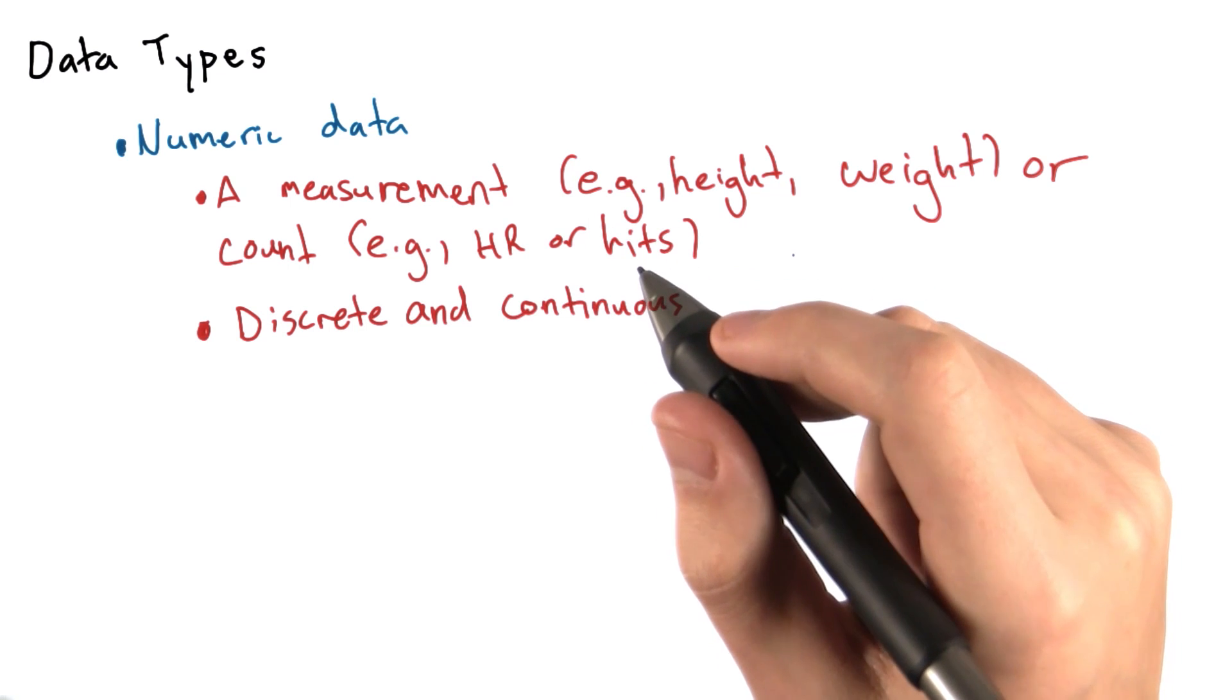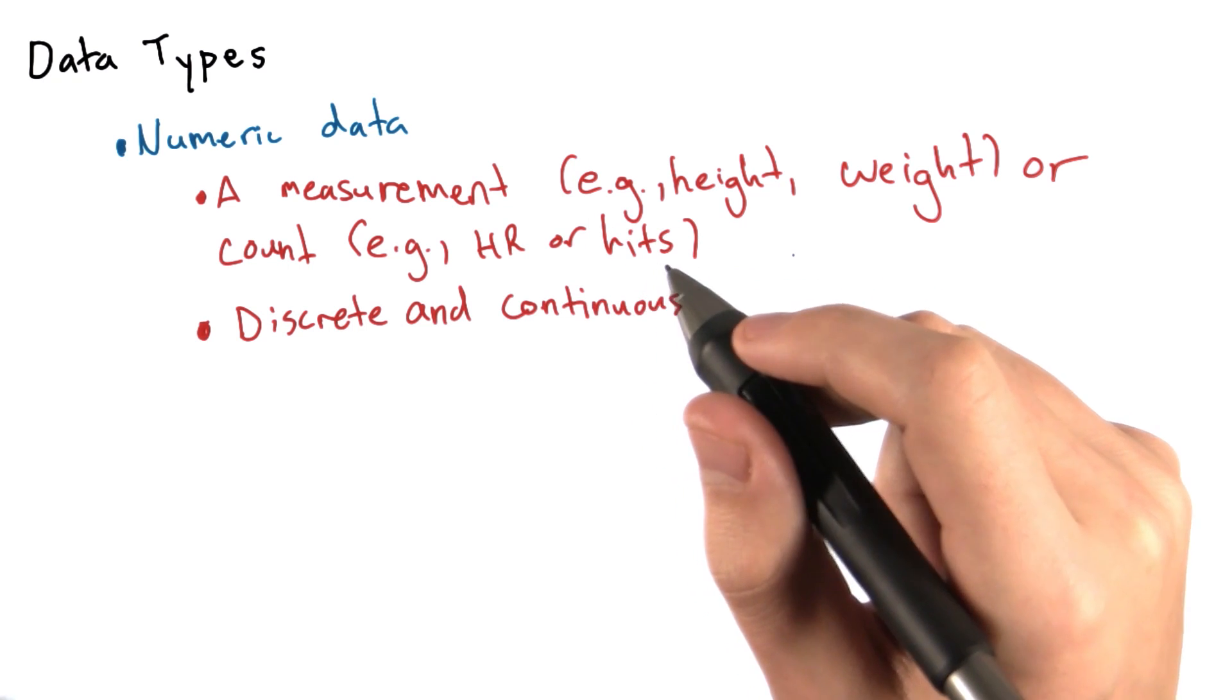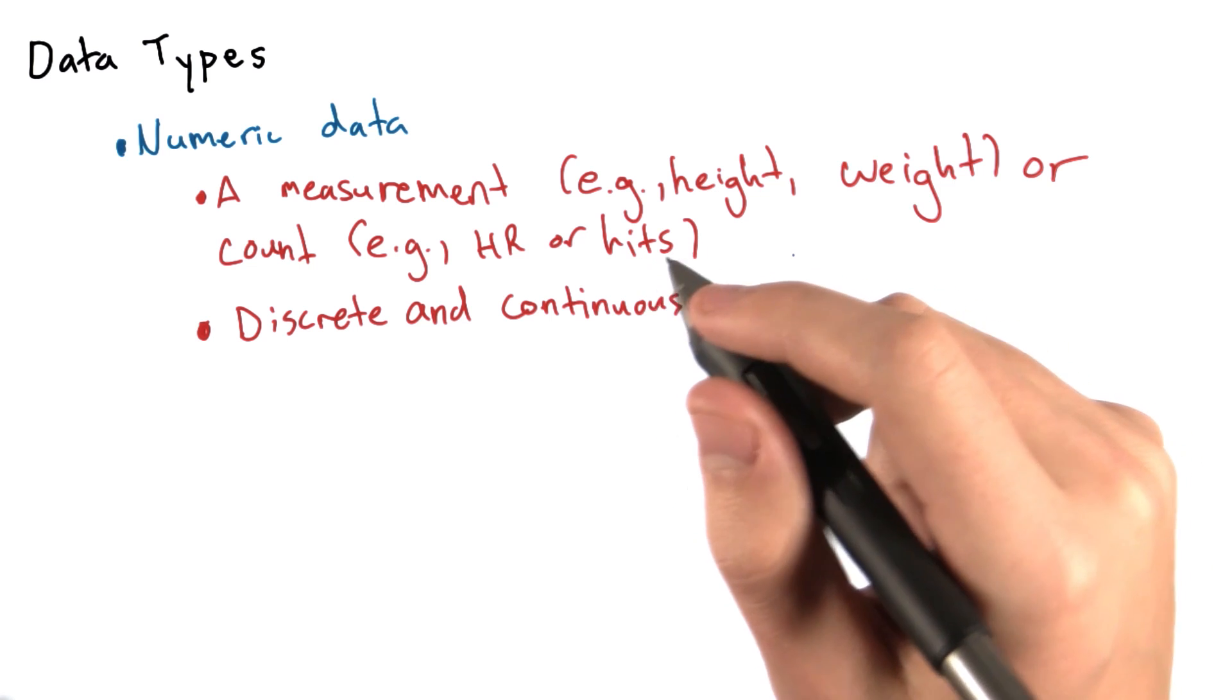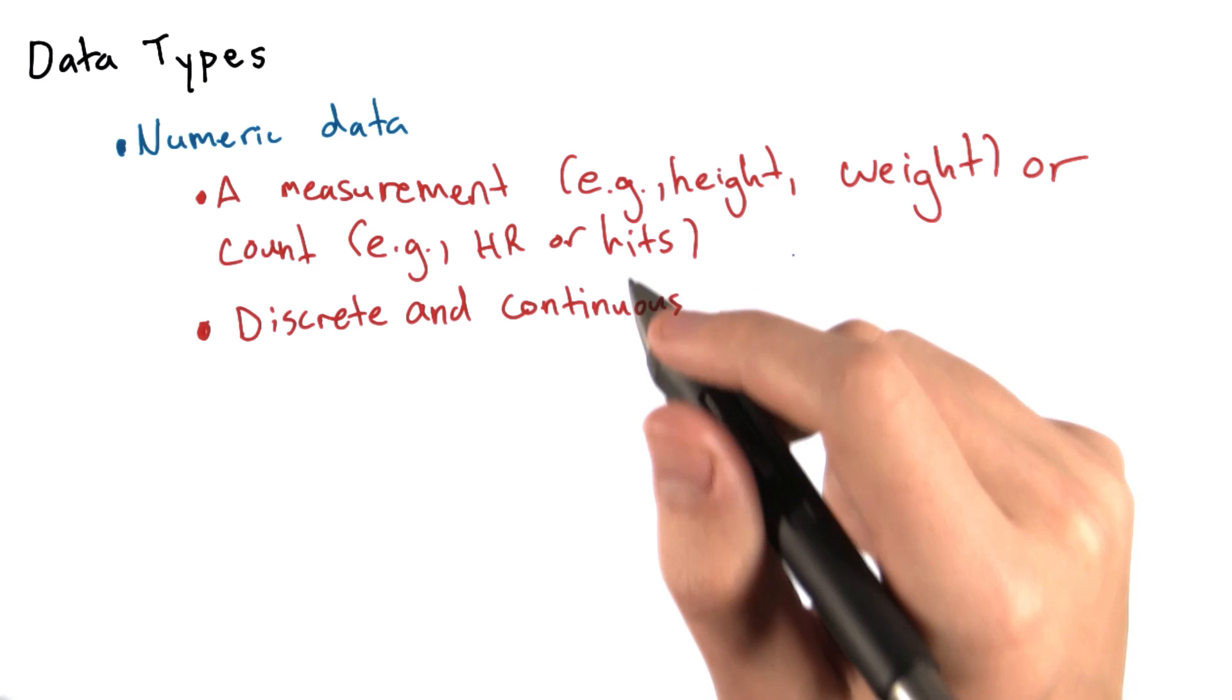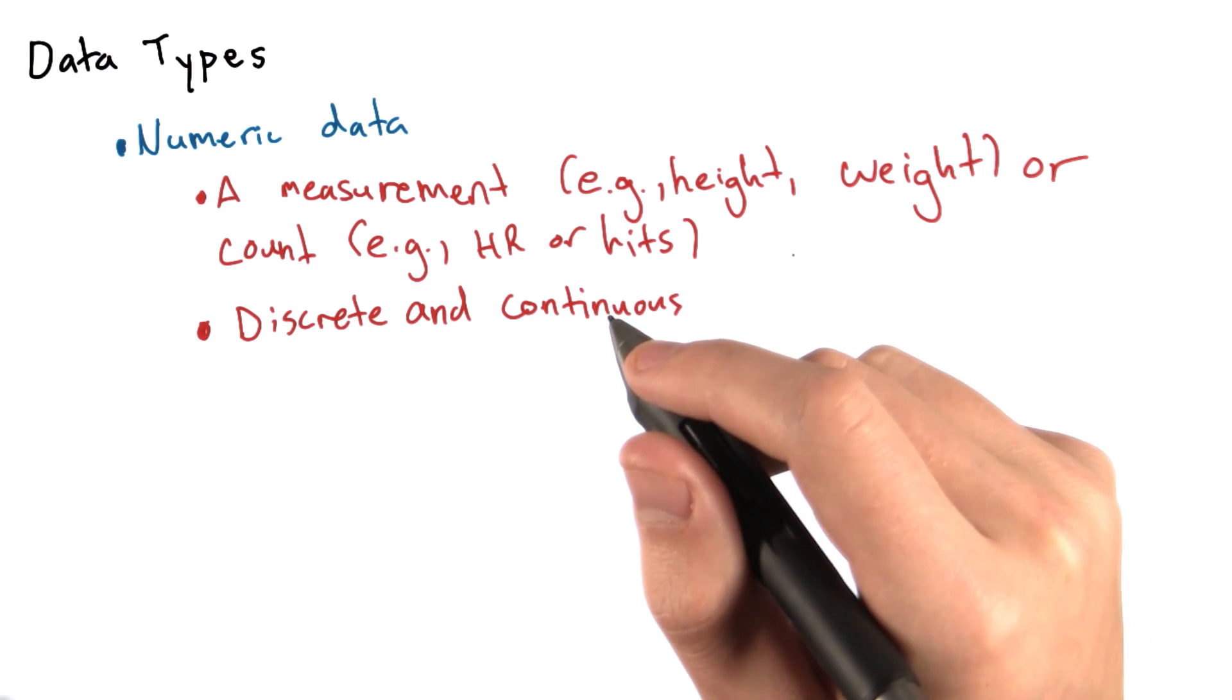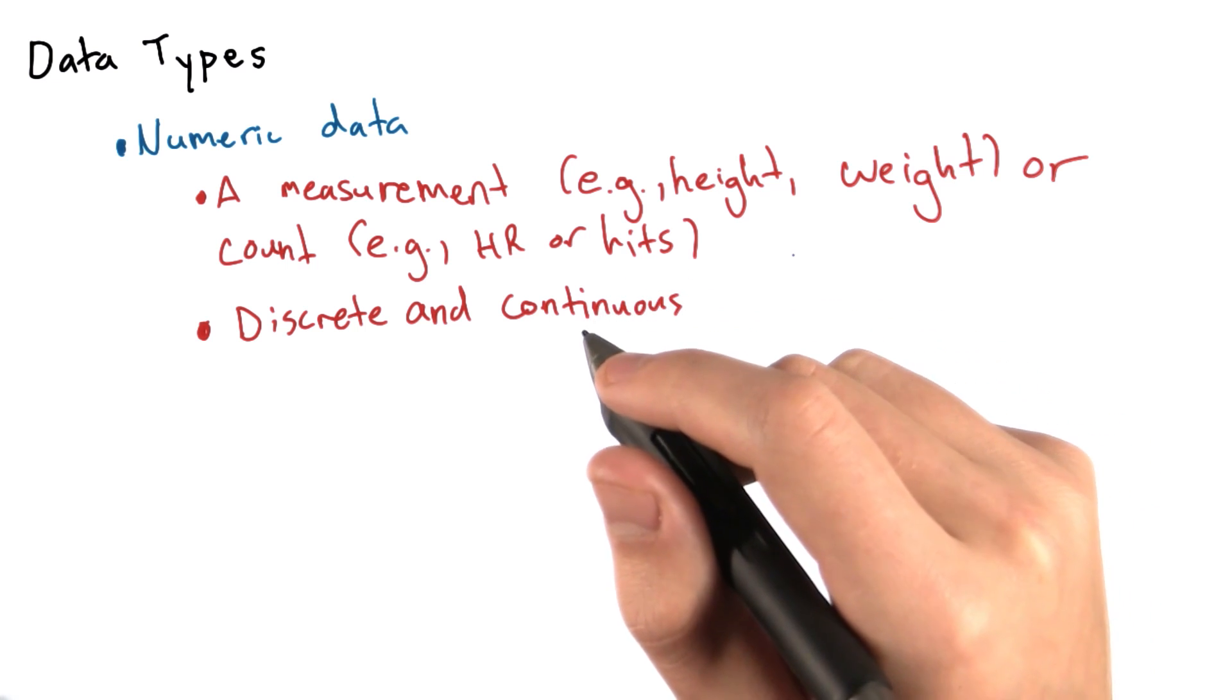For example, a player's number of home runs would be a discrete data set. You can only have discrete whole number values like 10, 25, or 34. A player cannot, for example, hit 14.375 home runs. A player either hits a home run or he doesn't.